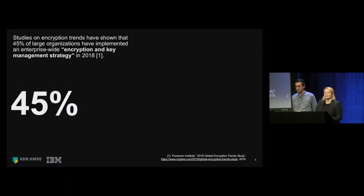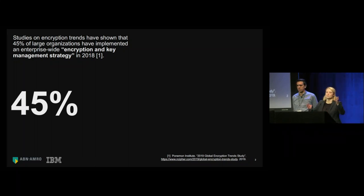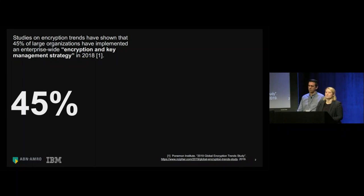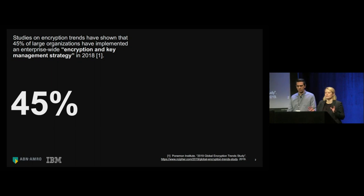Before diving into the case of ABN AMRO Bank, Christiane puts things in perspective: yearly surveys on encryption show that 45% of all large enterprises have an encryption and key management strategy that is consistently applied throughout the enterprise. What they want to talk about is a crypto strategy that goes beyond encryption and key management — and to show how they moved from defining this strategy to implementation.